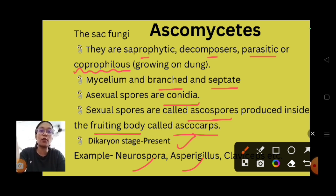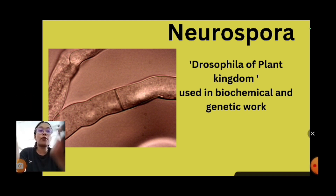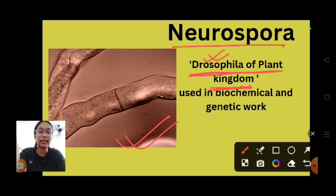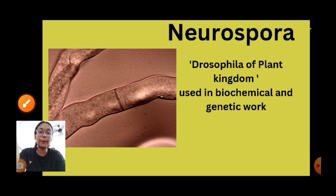Neurospora is also known as the Drosophila of the plant kingdom. Drosophila is a fruit fly used in laboratory experiments. Similarly, Neurospora is used in biochemical and genetic research work in the laboratory, which is why it is called the Drosophila of the plant kingdom.